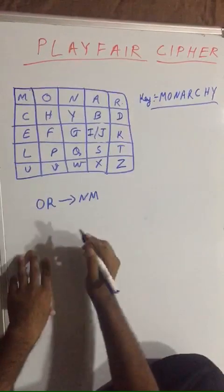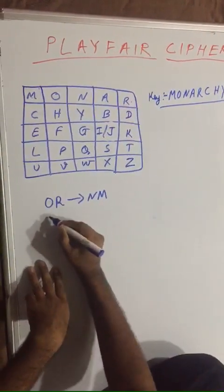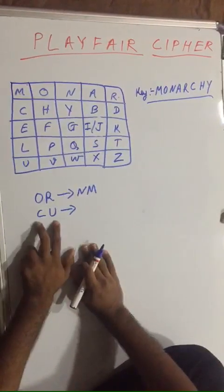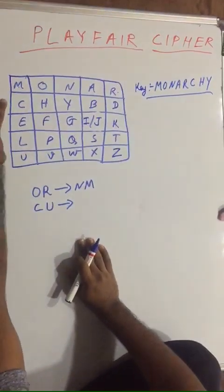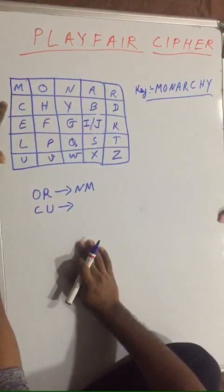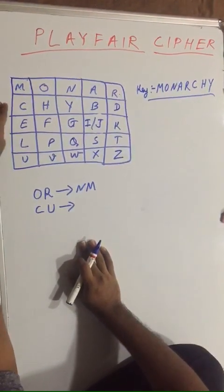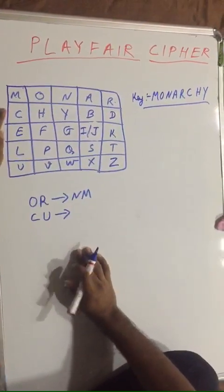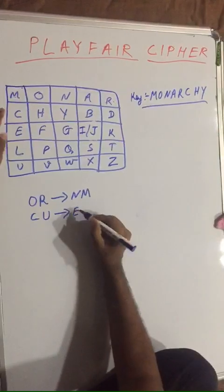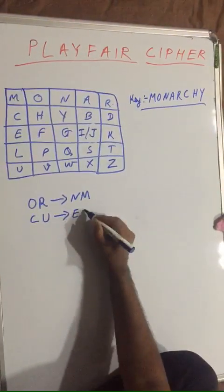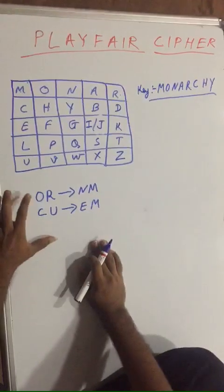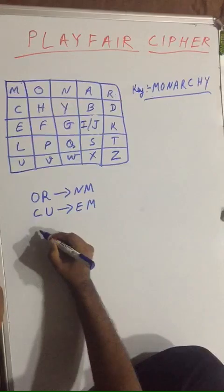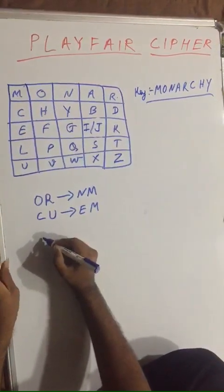Rule number five: if you are given a pair like C and U, find them in the matrix — C and U are in the same column. Whenever the two letters are in the same column, you go to the next value downward in that column. For C you would write E, and for U you wrap back up to M. So CU encrypts to EM.